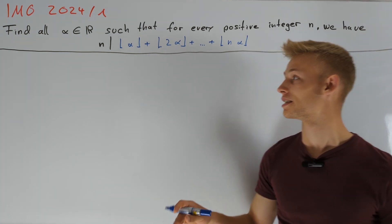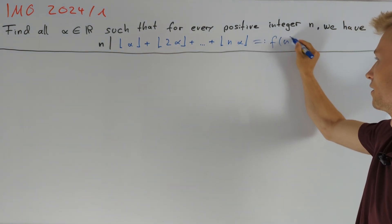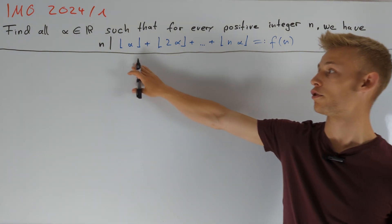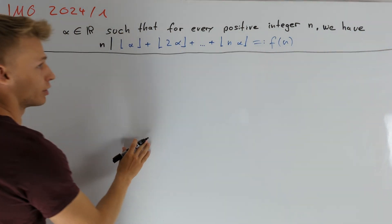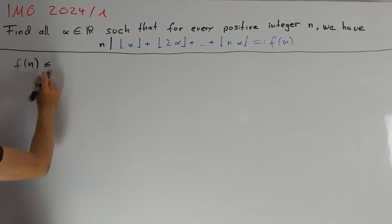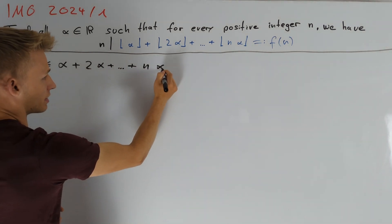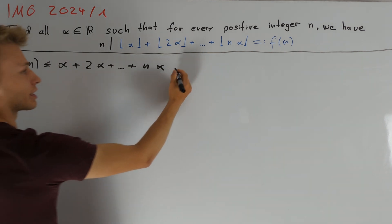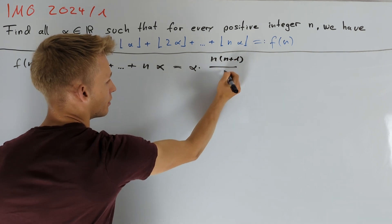The main difficulty in this problem is to get an understanding of this sum, which I want to denote by f of n. Whenever we have a problem using floor functions, a first good idea is to use the bound that the floor of a real number is less than or equal to this real number. This gives us a first inequality: f of n is less than or equal to alpha plus 2 alpha plus so on plus n times alpha, which we can write as alpha times n times n plus 1 divided by 2.